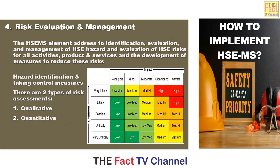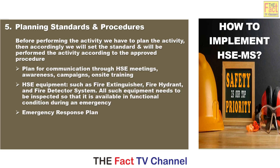Number four: Risk evaluation and management. This HSE management system element addresses the identification, evaluation, and management of HSE hazards and evaluation of HSE risks for all activities, products, and services, and the development of measures to reduce these risks. Hazard identification and taking control measures involve two types of risk assessments: qualitative and quantitative. A risk matrix is used to support this process.